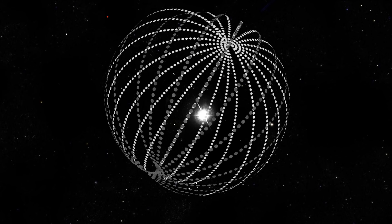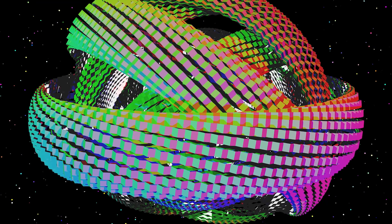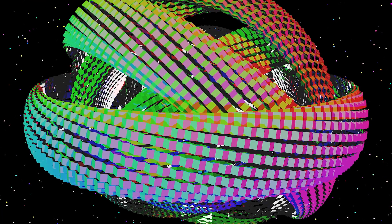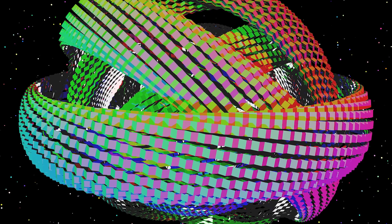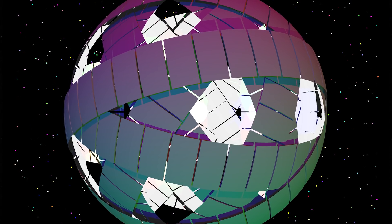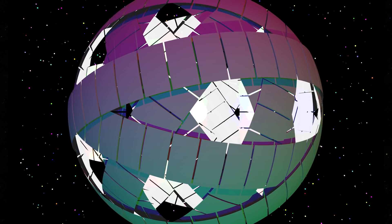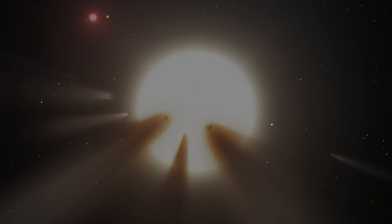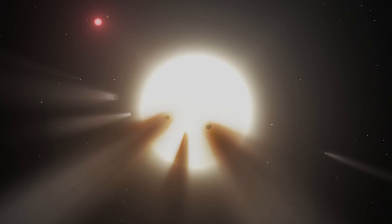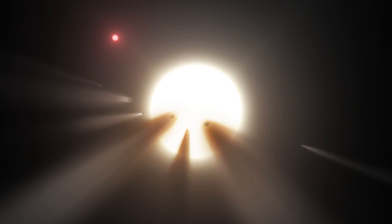So if alien civilizations do build very large structures for collecting this energy, if those structures are the size of planets or even larger, or if they have swarms of structures that span that size, then there's two ways that that would be obvious from Earth. One is that they'd intercept that starlight to collect it, so it wouldn't come here to Earth. So we'd see the star get dimmer any time the structures were between the Earth and the star.